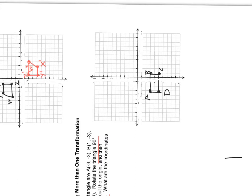So A prime is at 3, negative 3. B prime is at 3, 1. C prime is at 5, 1. And D prime is at 5, negative 3. So now I can turn my paper back and plot those points. That's the rotation.